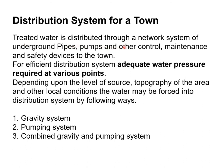Treated water is distributed through a network of underground pipes, pumps, and control and safety devices at town level. For an efficient distribution system, adequate water pressure must be maintained at various points, particularly at the user end. Depending on the source level, topography, and local conditions, water may be distributed by gravity, by pumping, or by a combined gravity-and-pumping system.